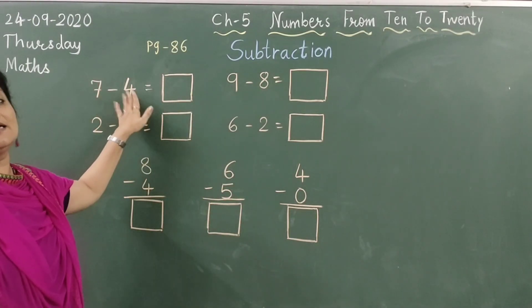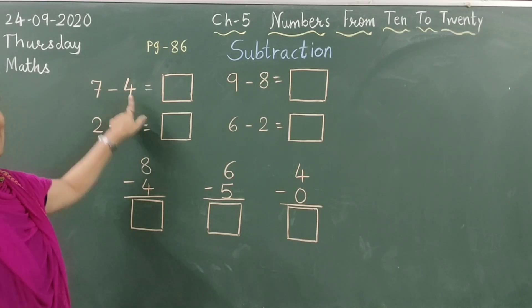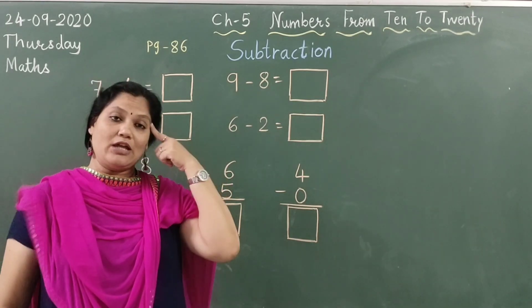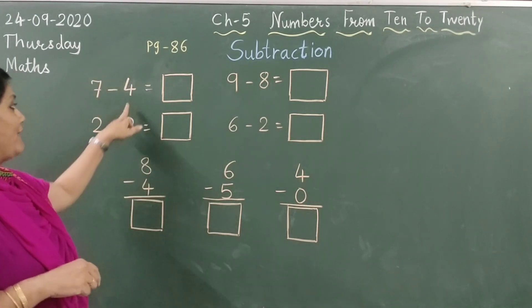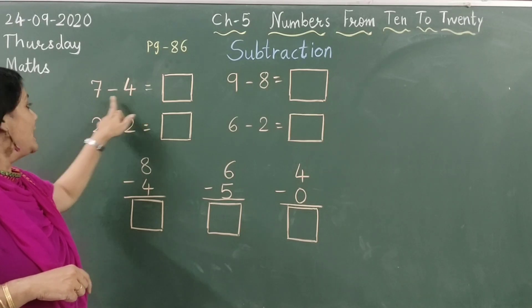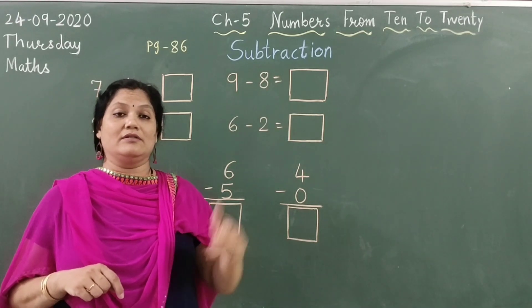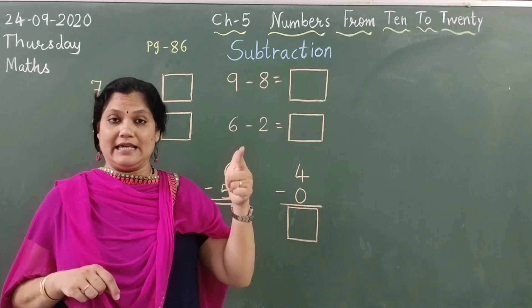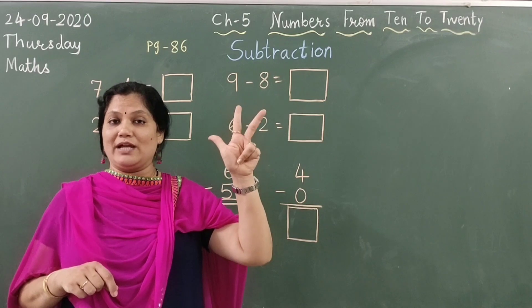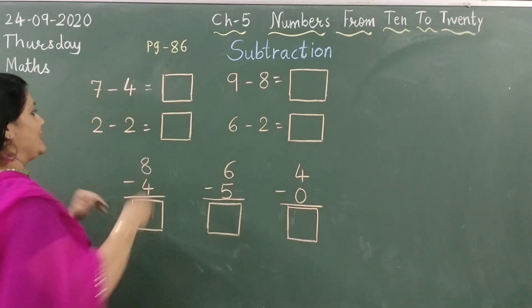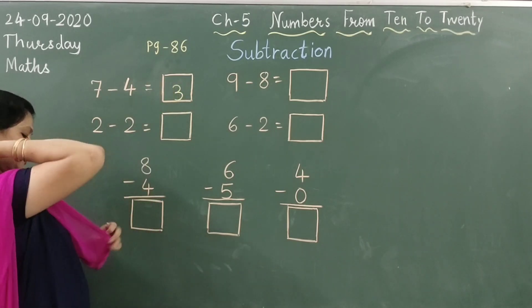7 minus 4. Here what we have to do? We have to think of this number 4 in our mind. We have to count after 4 till 7. What after 4? 5, 6 and 7. So how many numbers are there? 1, 2 and 3. So let us write here number 3.